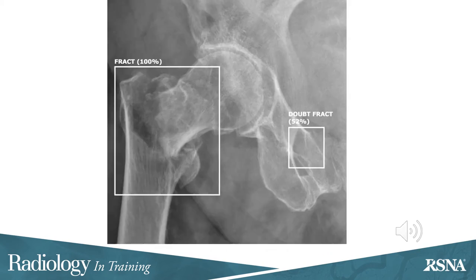Here is an example of a right hip radiograph with a true positive AI box on the right femoral neck fracture and a false positive AI box on the pubic ramus, possibly due to superimposition of soft tissues.